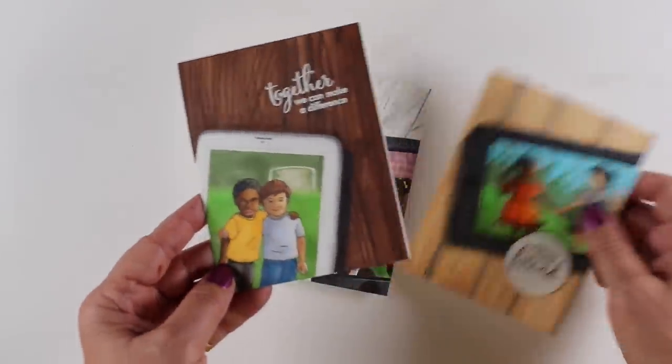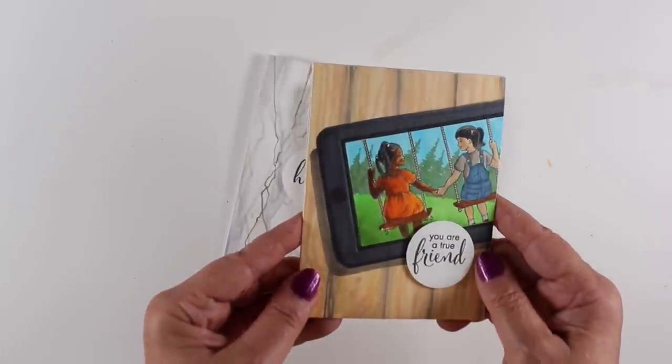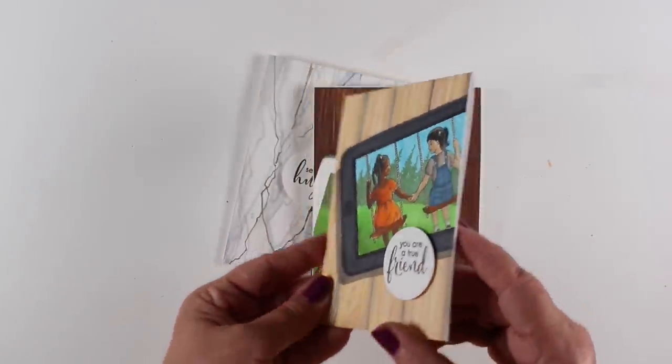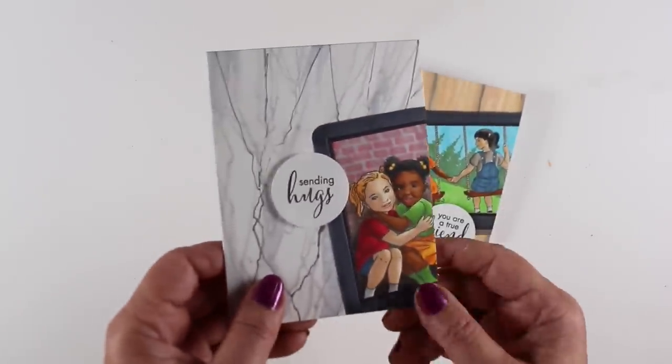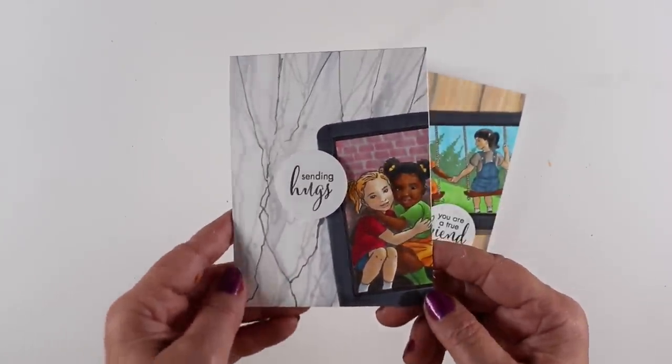So here are my finished cards. One, I was able to emboss the sentiment. Another, I had to put it on a little circle, which I thought still worked. And this one is my favorite. I also punched a circle for that one, the sending hugs.